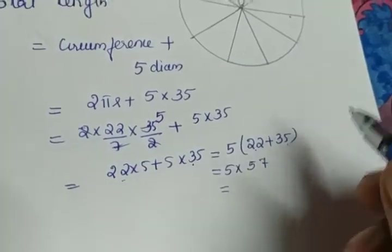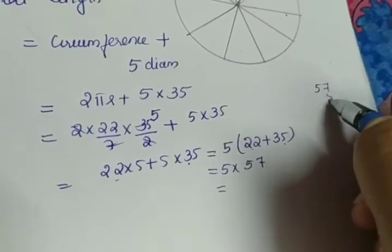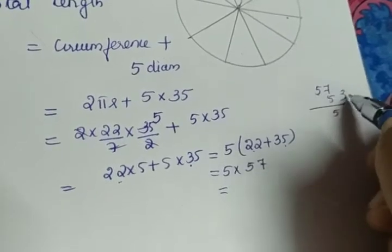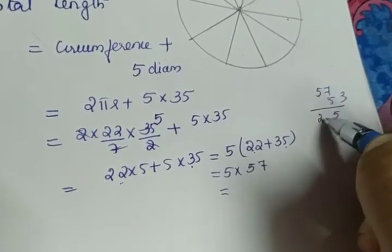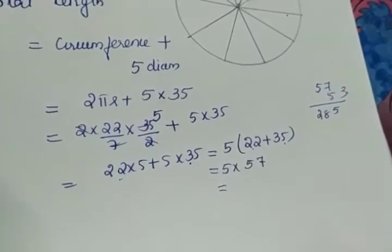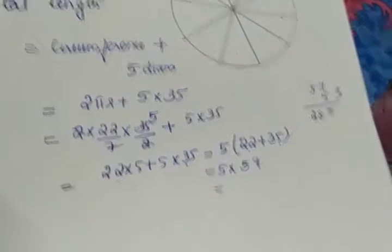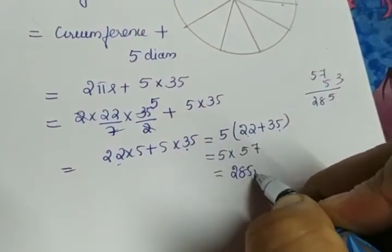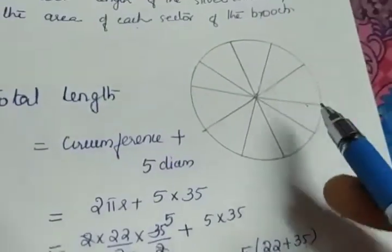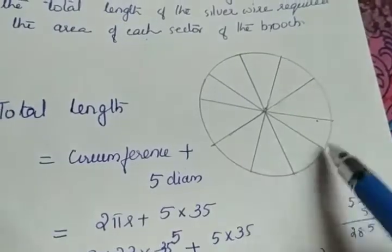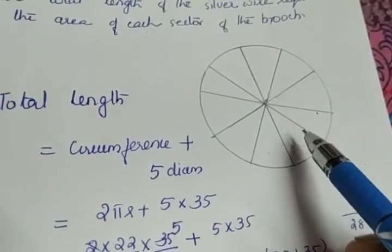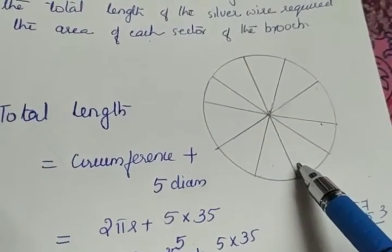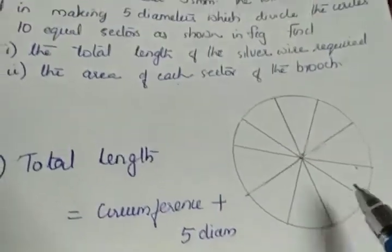So that is 5 × 57. 5 sevens are 35, 5 fives are 25, plus 3 gives 28 — so the answer is 285 mm. The total length of the silver wire used to form the brooch is 285 mm. That is the first part of the question.